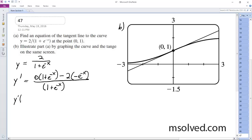So y prime of 0 is equal to, the first part is just 0 because 0 times anything is 0, so 2 minus e raised to the negative 0. Anything raised to 0 is 1, so 1 plus e raised to the 0 again, squared.